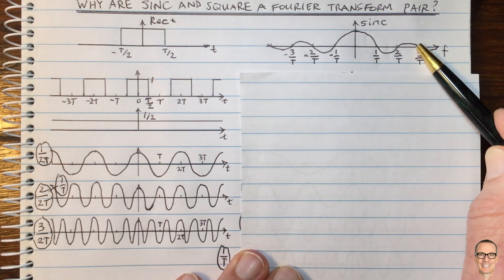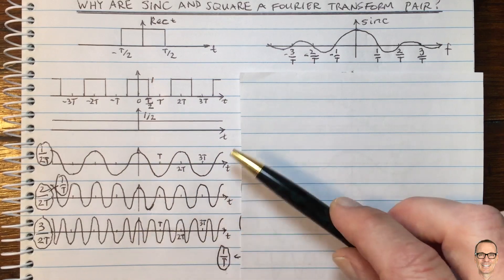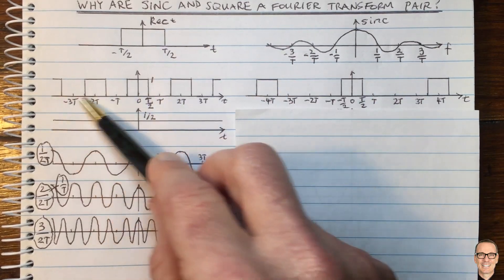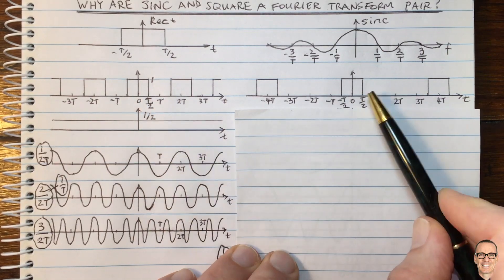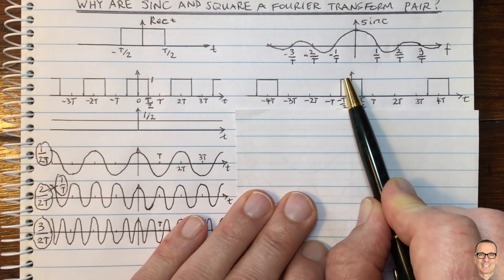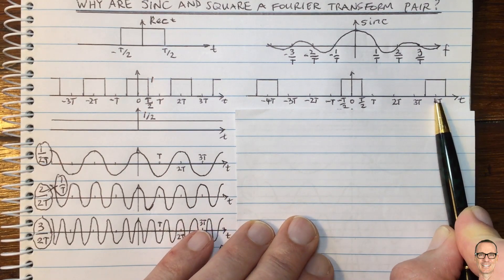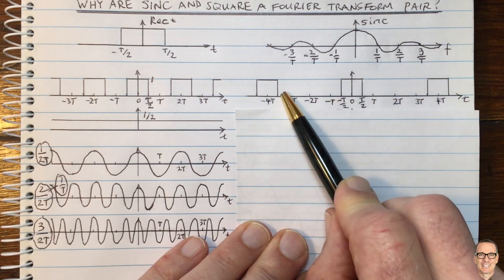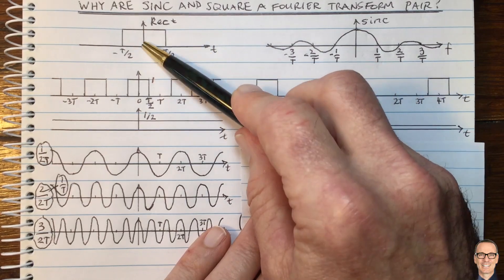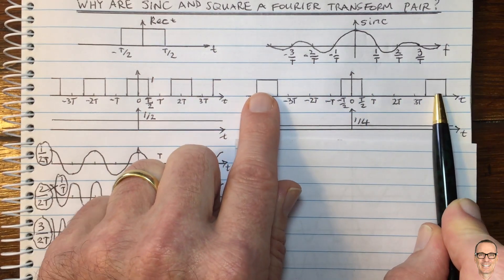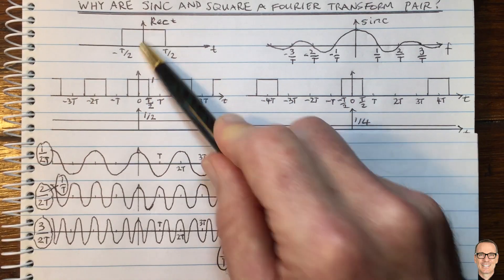We've answered the zero-crossing question, but what about why the sinc is fully filled in for the rect? So far we've just got discrete components. Let's move to a waveform more like the rect — one that still has the same square function between −T/2 and T/2, but now doesn't repeat until 4T. You can imagine it at 8T and even bigger, and at infinite time you have the rect function. This is still periodic, so we still have discrete frequencies, but they're more densely spaced.